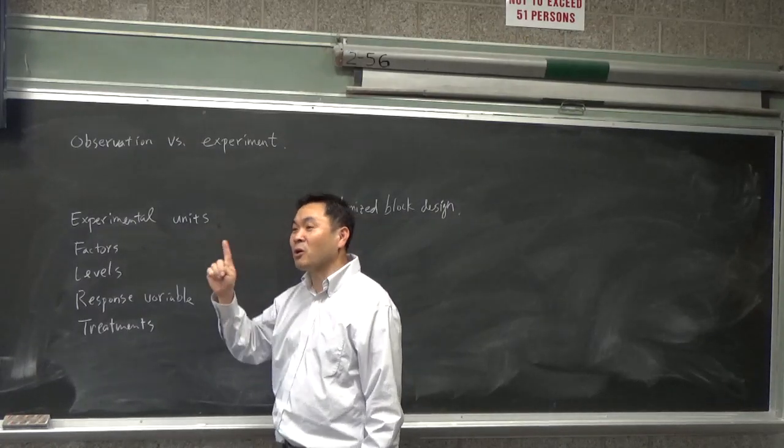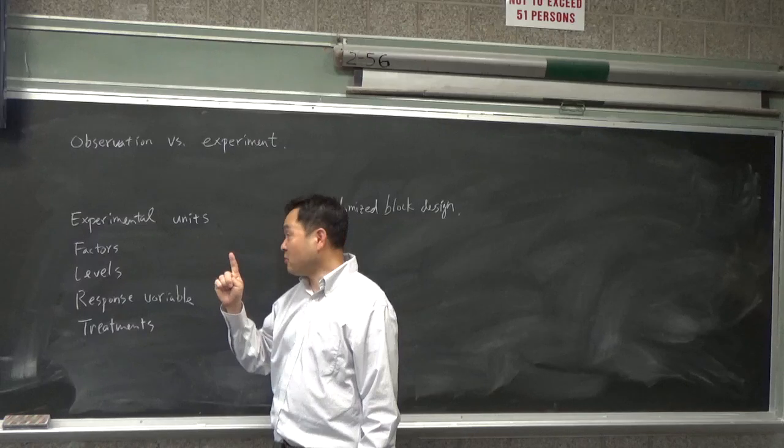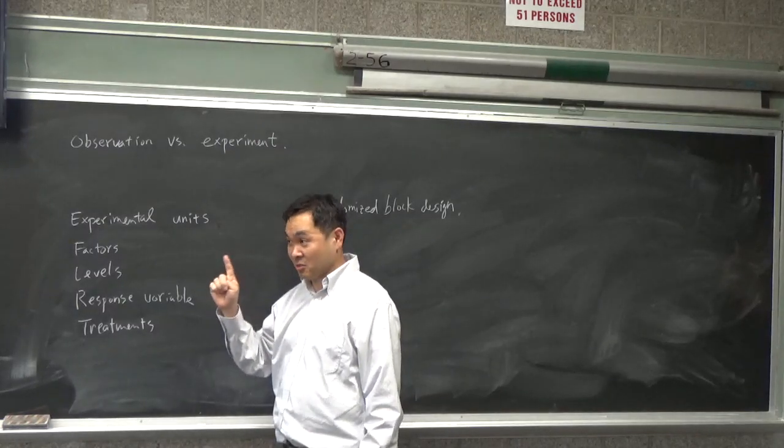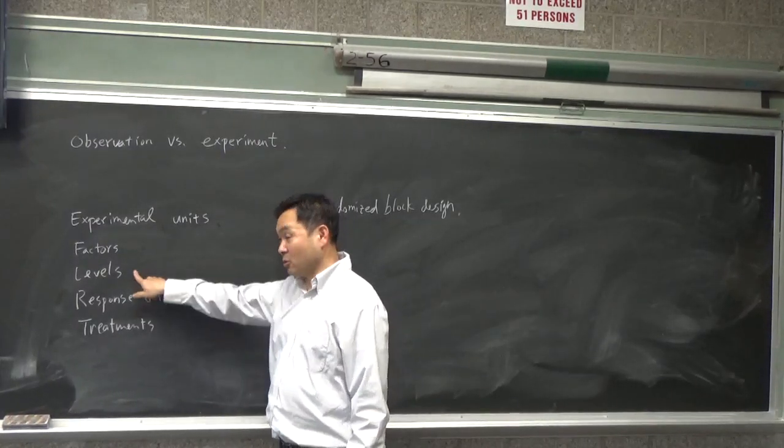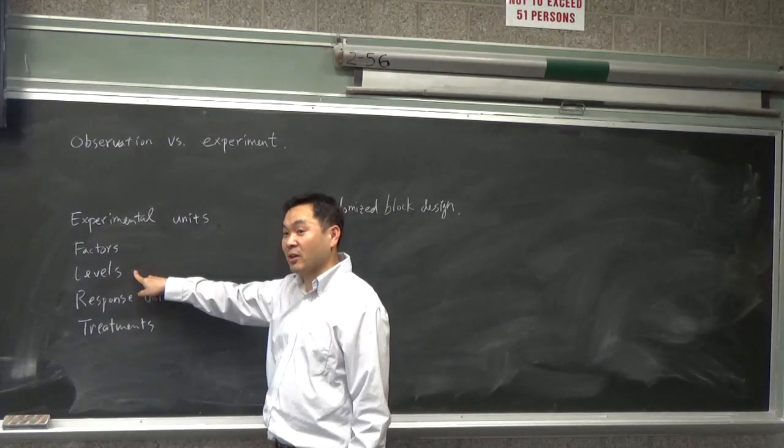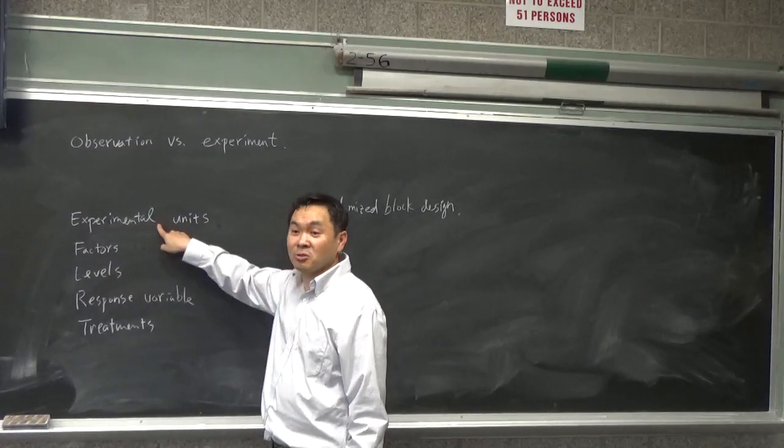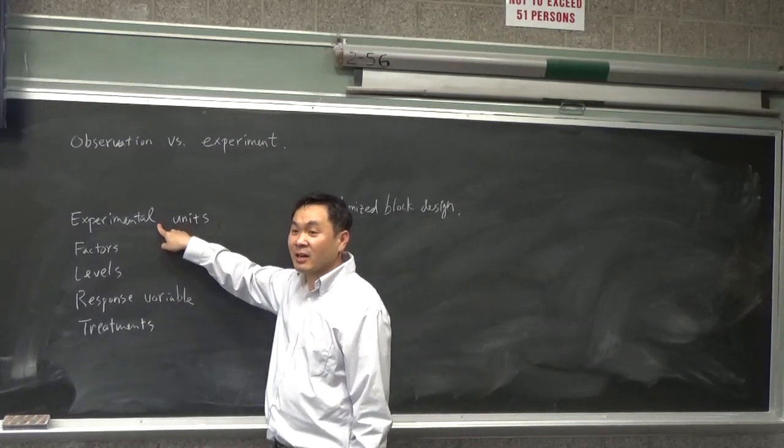No, no, you said one factor. That's one factor because the factor is the type of drug administered, okay? But the four would be the levels, okay? Because there are four different ways that this factor can be applied to each experimental unit. Is this okay?